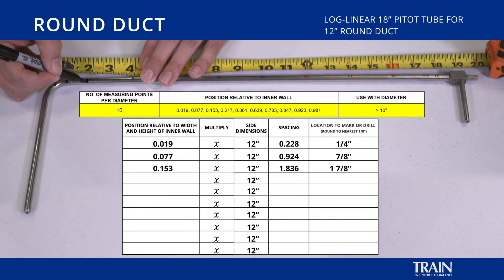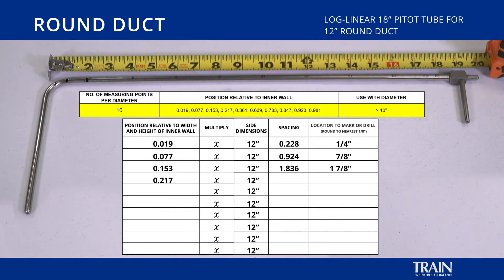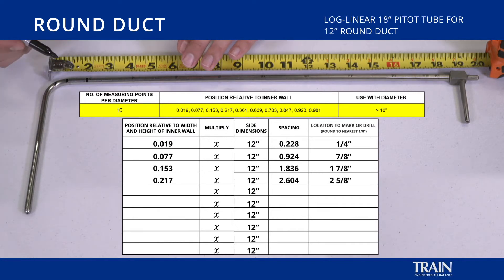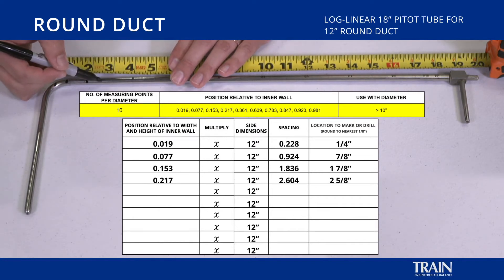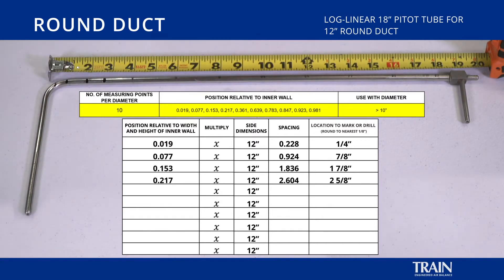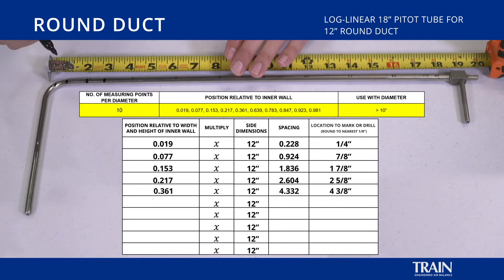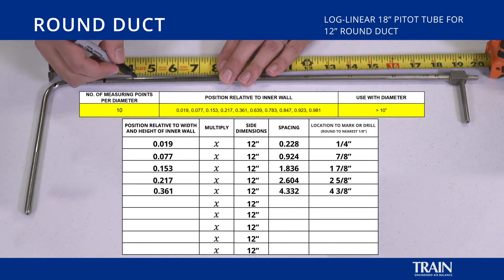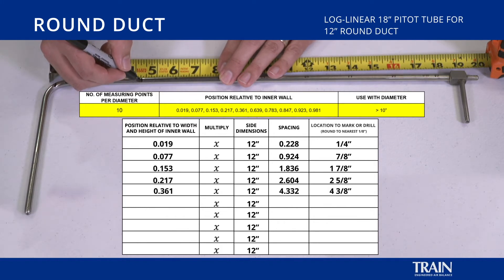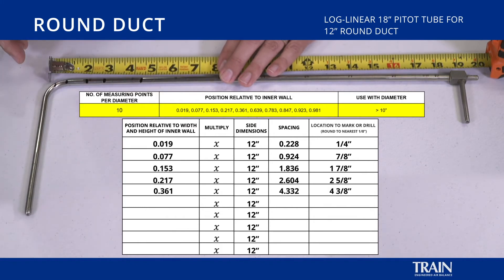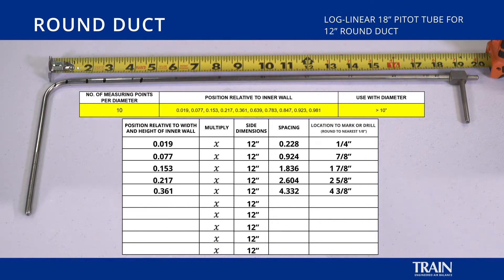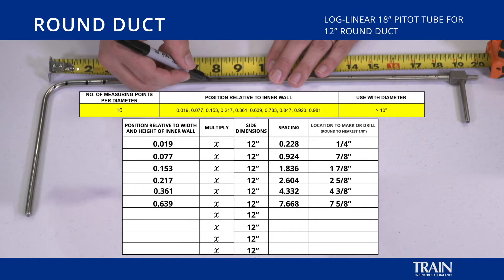Next is 0.217, and that results in a 2 and 5 eighths inch measurement. The fifth factor, 0.361, multiplied by 12 inches, results in 4 and 3 eighths inches. The following five measurements will be performed in much the same way, using the last five factors of the log linear chart.